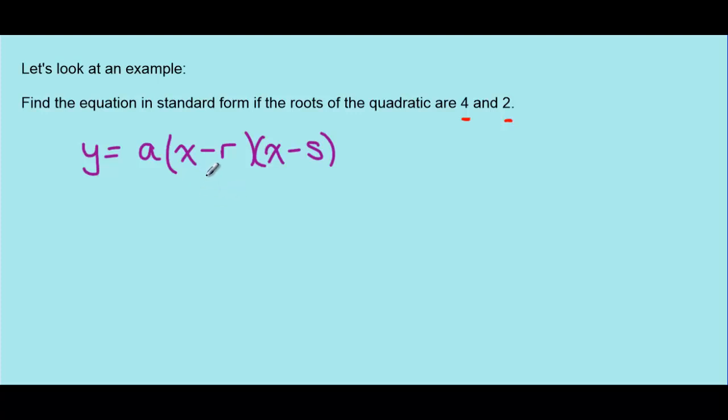So if we see an (x minus 5) in brackets, that means that one of the roots will be positive 5. So if our roots are 4 and 2, positive 4 and positive 2, inside the brackets then we should see negative signs.